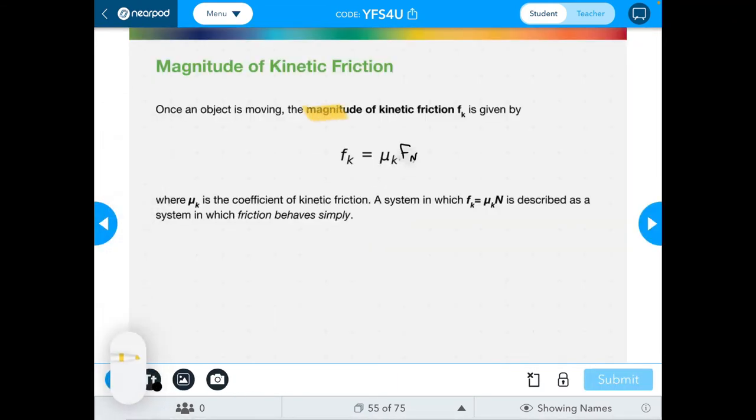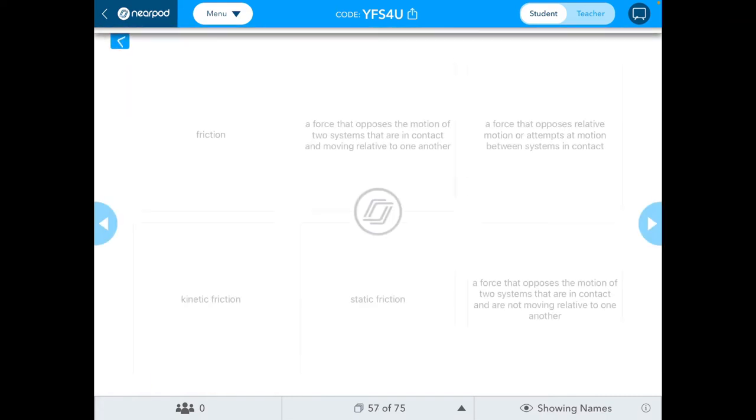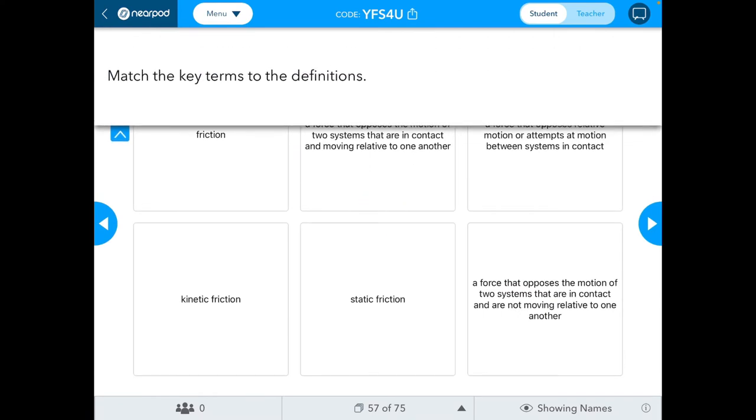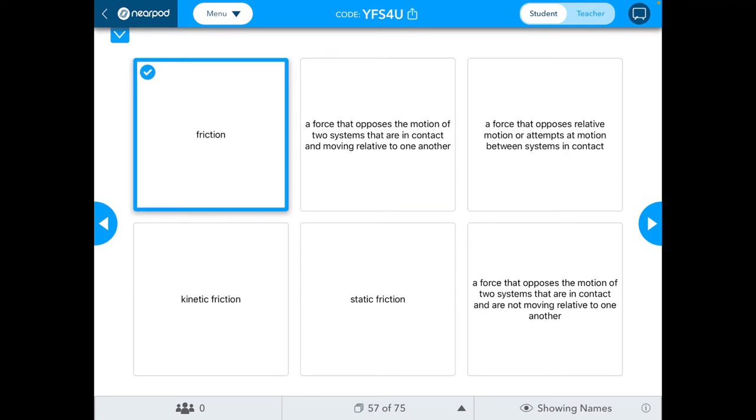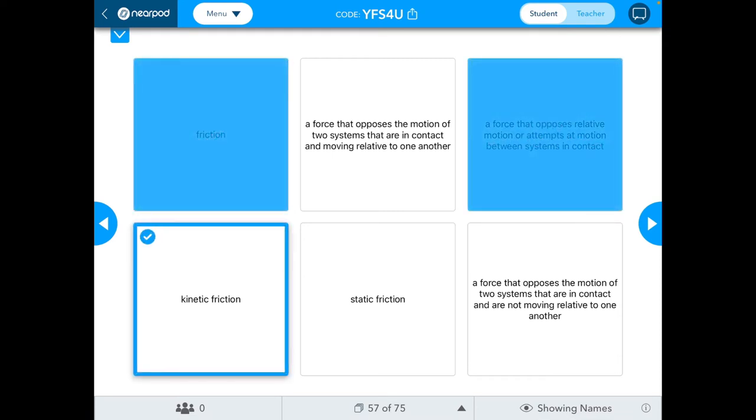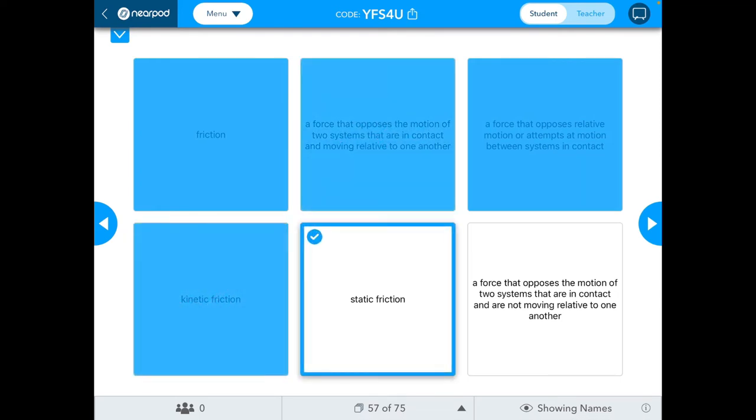Then we have kinetic friction, the magnitude of kinetic friction. This one is an equals. If you remember that graph that I drew, that sketch of the graph, it had that peak for the static friction, and then it flatlined for the kinetic as long as we're moving at a constant velocity. So matching these key terms: friction, kinetic friction, and static friction. Friction is the force that opposes relative motion or attempts at motion between systems in contact. Kinetic is the one that's specifically opposing motion when they are moving, and static friction is when they are not moving.